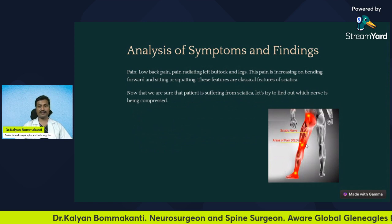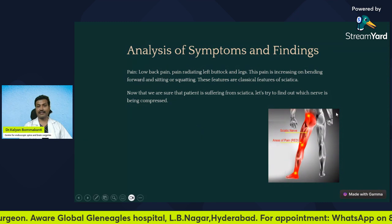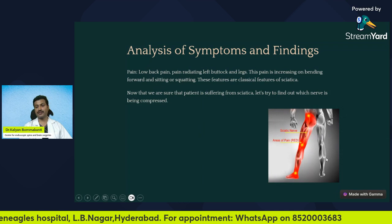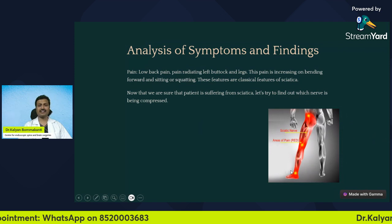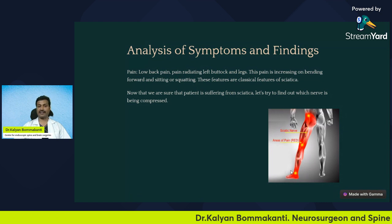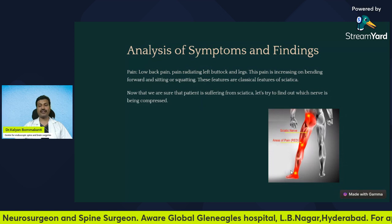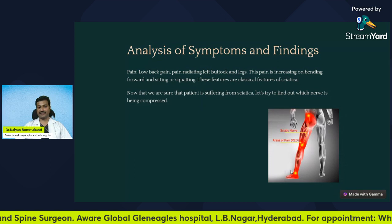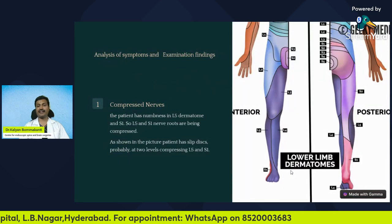Let us analyze the symptoms and findings. The patient had low back pain radiating along the left buttock and legs, increasing on bending forward, sitting, or squatting. These are classical features of sciatica. Now that the patient is suffering from sciatica, we need to know which nerve is getting compressed. Let's analyze the symptoms.